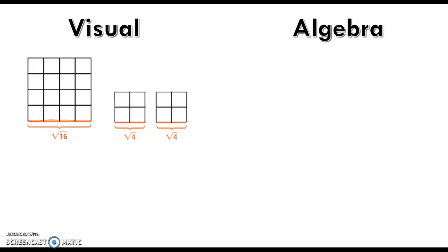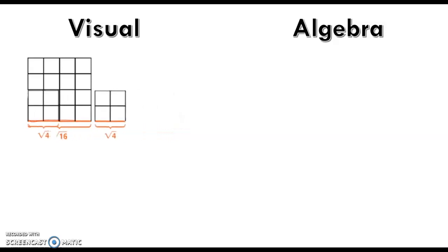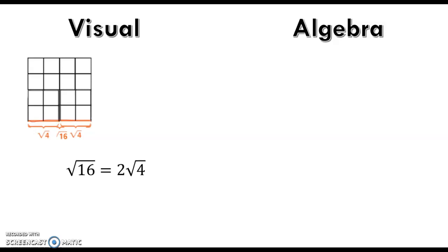Then there are two squares with an area of 4. What you can see is that if you take those two squares, their side lengths are the same size as the square root of 16. The squares are not the same size, but the side lengths add up. So we can write the square root of 16 as 2 times the square root of 4.